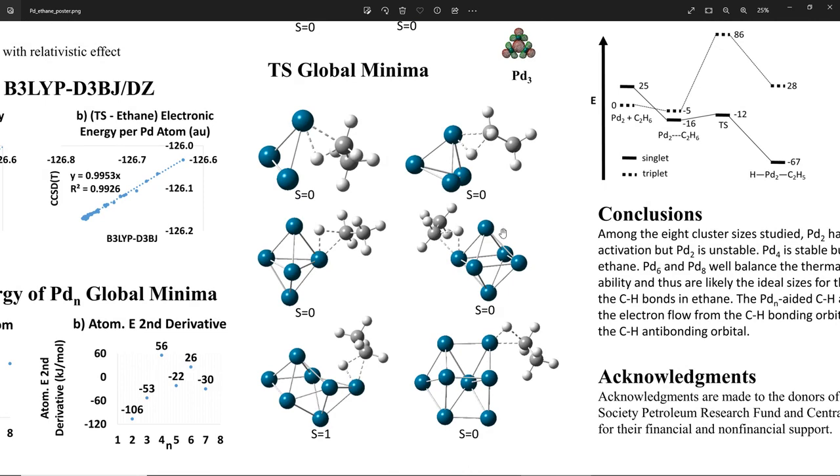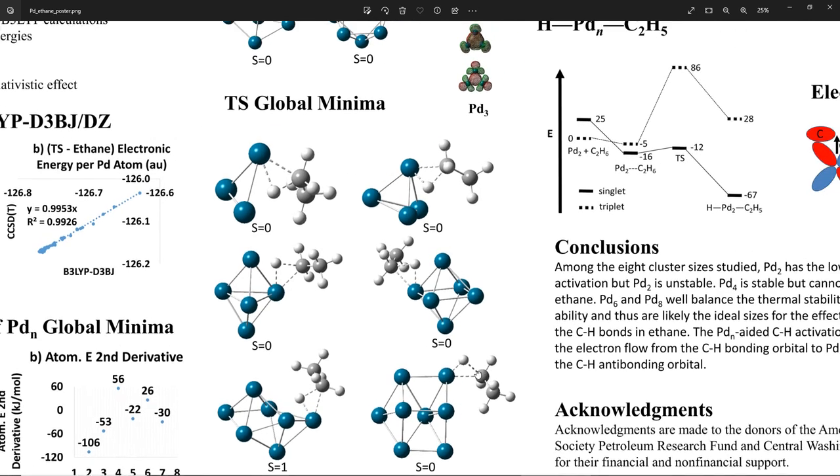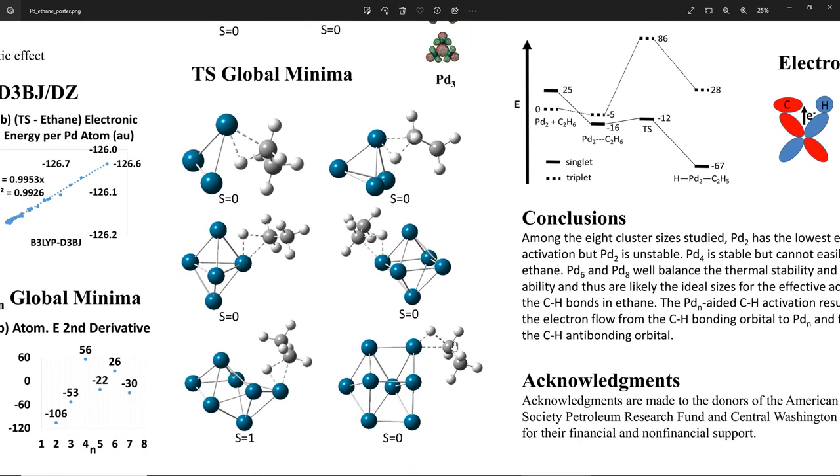Now those are the structures of the transition states from size 3 to size 8. In each of the transition state structures, you can see there are three partial bonds between carbon and hydrogen, hydrogen and palladium, and palladium and carbon.